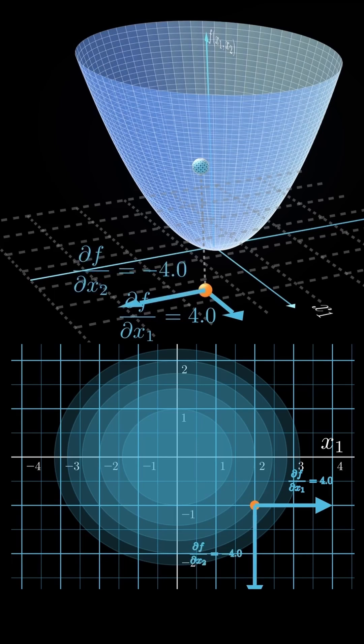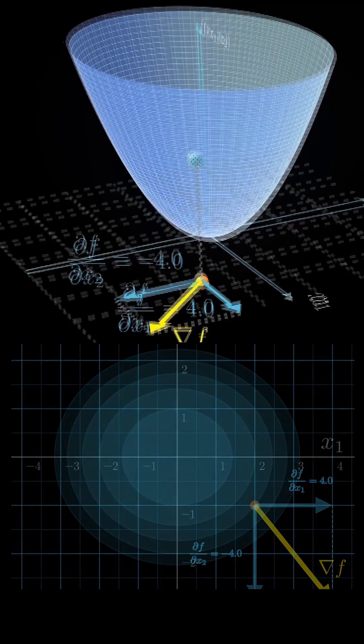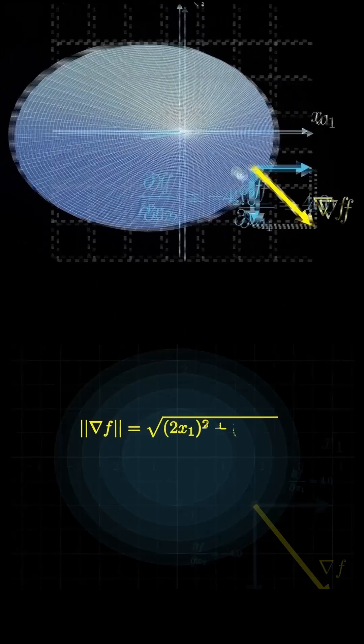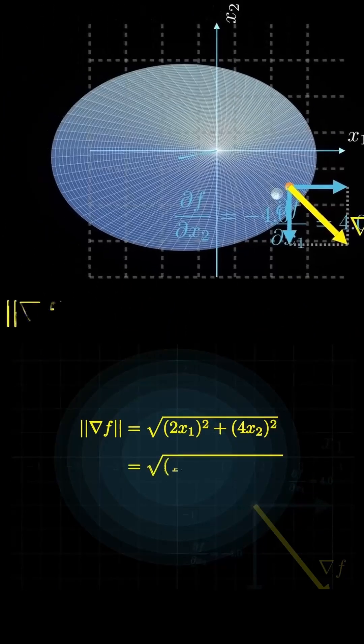That means the gradient vector points in this yellow direction, and the overall gradient magnitude is 4 times the square root of 2.